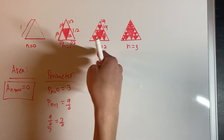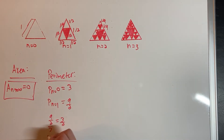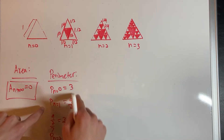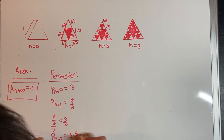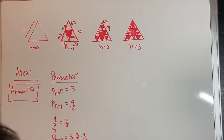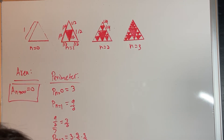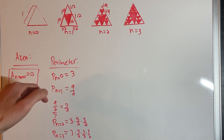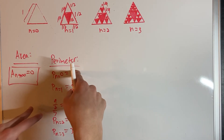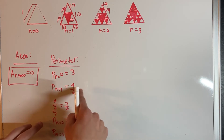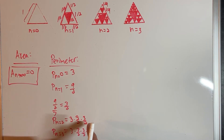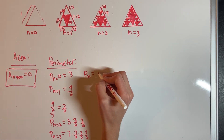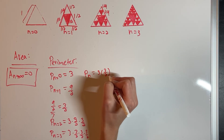We know that the perimeter at n equals 2 will be three-halves greater than n equals 1. So the perimeter at n equals 2 equals three times three-halves squared, and the perimeter at n equals 3 equals three times three-halves cubed. Following this pattern — three times three-halves to the zero, three times three-halves to the first, three times three-halves to the second — we can say that the perimeter at step n equals three times three-halves to the n power.